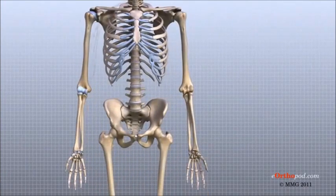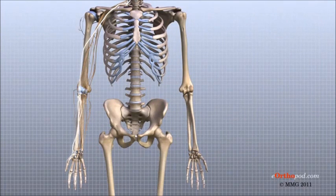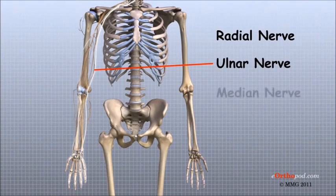All of the nerves that travel down the arm pass across the elbow. Three main nerves begin together at the shoulder, the radial nerve, the ulnar nerve, and the median nerve.